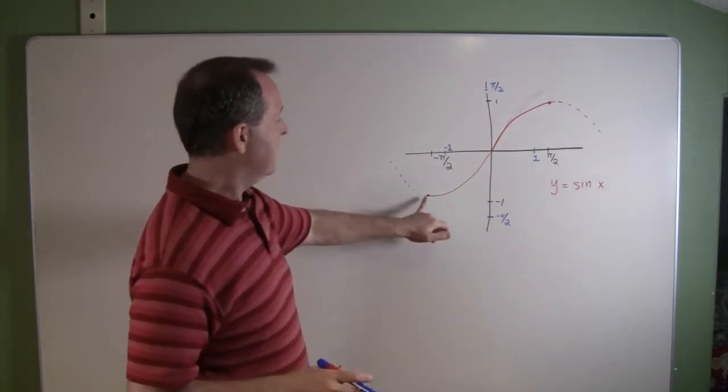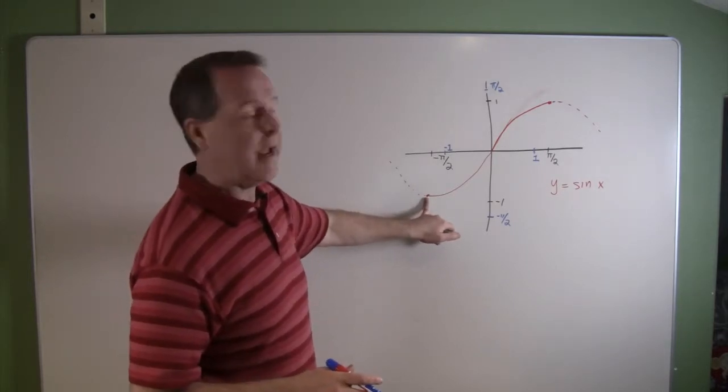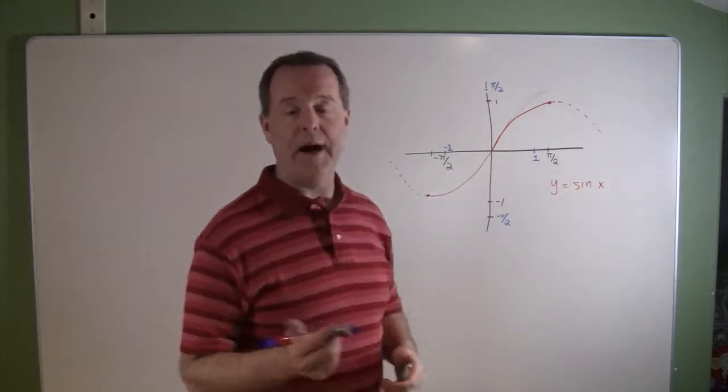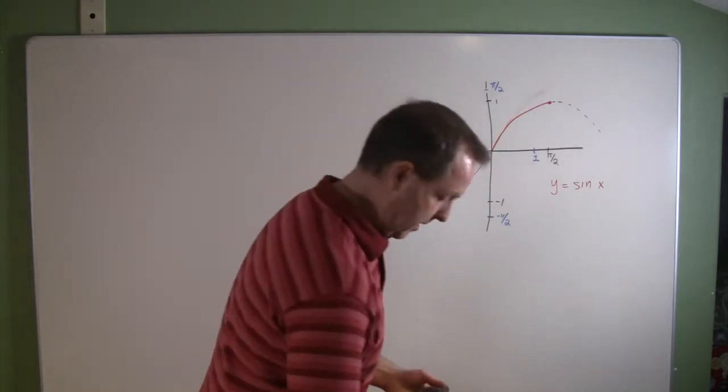When we talk about inverse functions for sines and cosines, we're going to be talking about a restricted domain. For a sine, we typically look at from the point minus pi halves to positive pi halves.